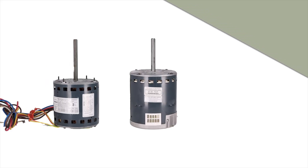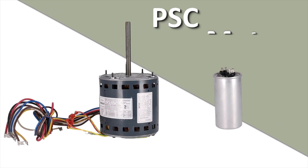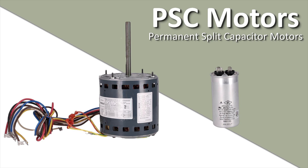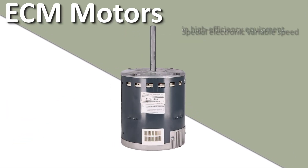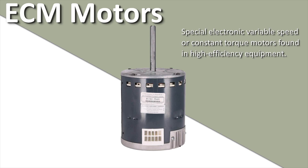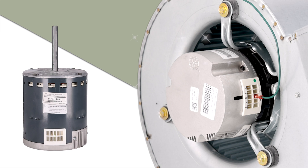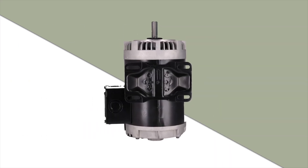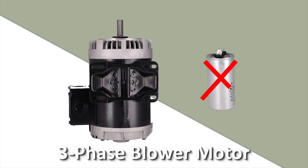There are three primary or common types of motors used in air conditioning. PSC motors, or permanent split capacitor motors, will have an associated run capacitor. ECM motors are special electronic variable speed or constant torque motors found in high efficiency equipment. This blower assembly has this special motor. Some commercial equipment such as rooftop units may have a three phase blower motor, and these will not have a run capacitor.